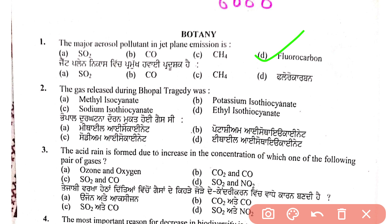Second question: the gas released during the Bhopal tragedy. The Bhopal tragedy occurred and a toxic gas was released. The name of the gas is methyl isocyanate. Be careful — ethyl isocyanate is also given as an option, so we have to remember it is methyl isocyanate.